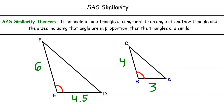We can use the AA similarity postulate to prove two other theorems, which you'll work through in exercises. The first is side-angle-side similarity, or SAS similarity: if an angle of one triangle is congruent to an angle of another triangle and the sides including that angle are in proportion, then the triangles are similar. Pause the video, copy down the SAS similarity theorem and the diagrams, then come back to hear more about it and move on to the next theorem.